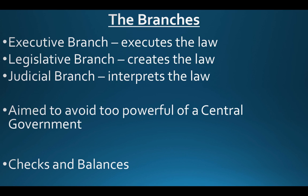Checks and balances between branches ensure no single branch becomes too powerful. Tracing a law illustrates this: the legislative branch creates a law, which goes to the president to sign. If signed, it becomes law. If questioned, the judicial branch can interpret whether it is acceptable. However, if the president vetoes the law, it returns to the legislative branch. If two-thirds of both houses of Congress agree, the law is created even without the president's signature. Finally, the judicial branch can still have the last say.